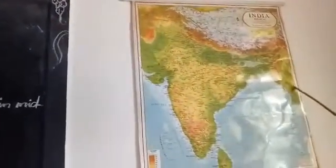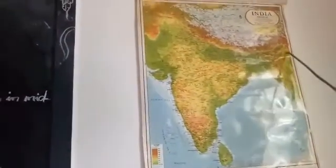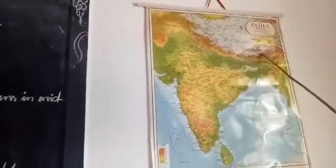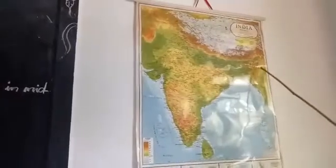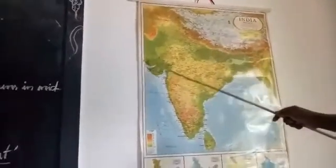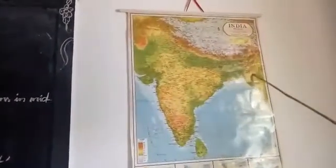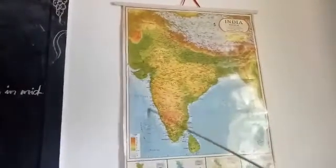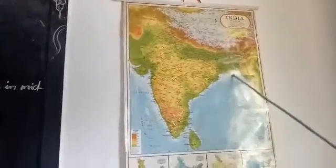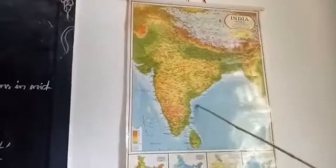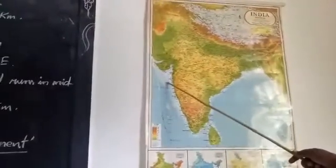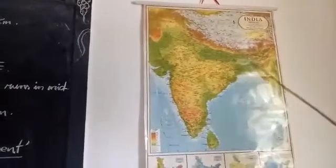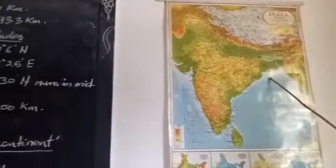The land frontiers — where the land is touched by neighboring countries — are known as land frontiers, and it is around 15,200 kilometers. The coastline is about 7,516 kilometers in length, including Indian islands.